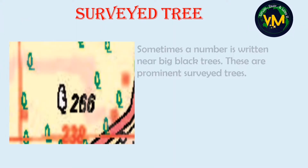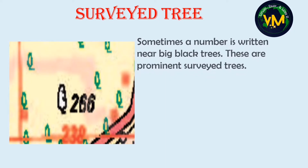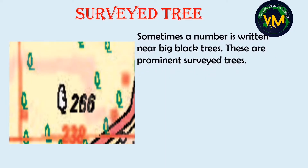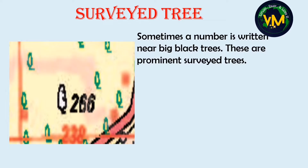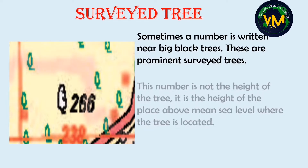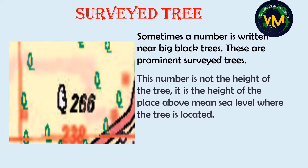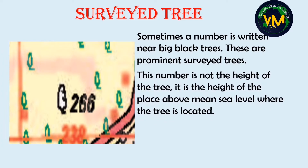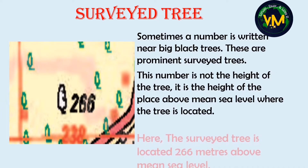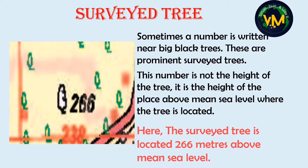Sometimes you can see a number written near a big black tree. This is a prominent survey tree. This number is actually not the height of the tree as you might think — it is the height of the place above mean sea level where the tree is located. In this case, the survey tree is located 266 meters above sea level.